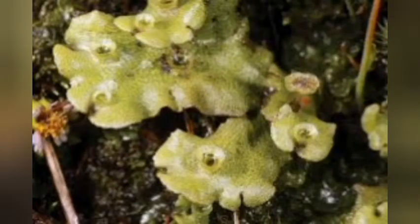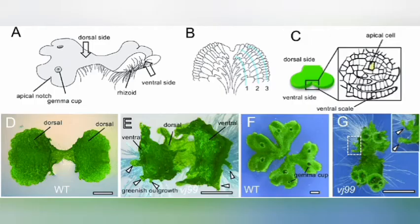The second form is colonial Algae. It consists of groups of individual cells. As you see in these pictures, they are in colonies. If you know what a colony is, this is the second type, and this includes Volvox.